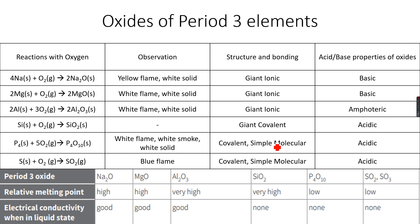Now oxides of period 3 elements. This is a very important topic. The period 3 elements, this is how they react with oxygen. Sodium reacts with oxygen to form an ionic compound with a giant ionic lattice, which is sodium oxide. When this reaction takes place, we see a yellow flame and a white solid is formed as the end product. You need to remember these colors because you will have to write them in the exams.